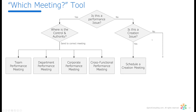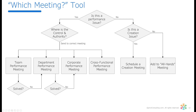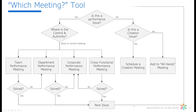If it's not a performance issue, it's simple: is it a creation issue? If yes, schedule a creation meeting. If no, add it to the next all-hands meeting. For completeness, there's also an escalation process. If it can't be solved at the team level, escalate to the department level; if not there, escalate to the corporate level. A cross-functional meeting that can't resolve it also escalates to corporate. Once solved, move on to the next issue.